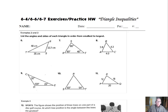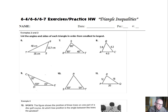Sides that are opposite can be arranged in terms of the angles that are opposite them. The side opposite the biggest angle is the biggest side, the side opposite the smallest angle is the smallest side, and the angle opposite the smallest side is the smallest angle, and so on.